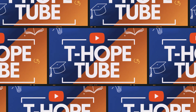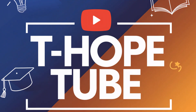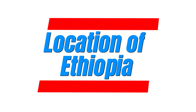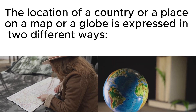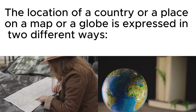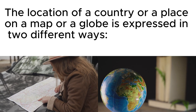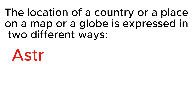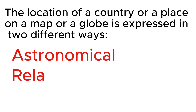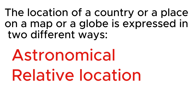Welcome back to the channel. Today we are diving into the location of Ethiopia. The location of a country or a place on a map or a globe is expressed in two different ways: astronomical and relative location.